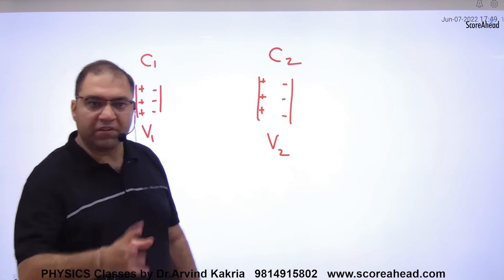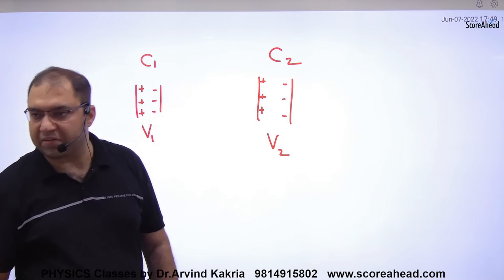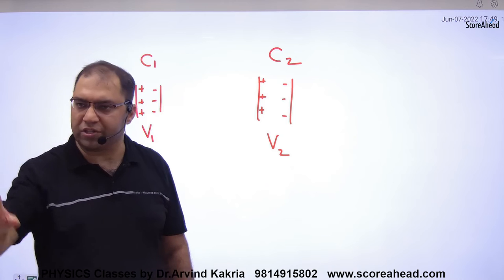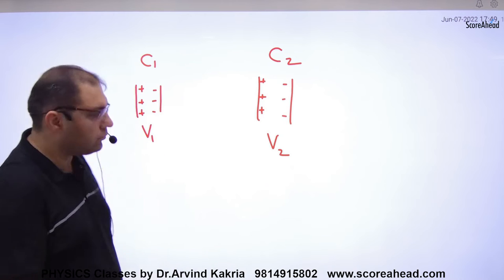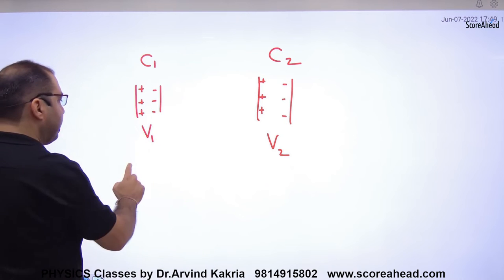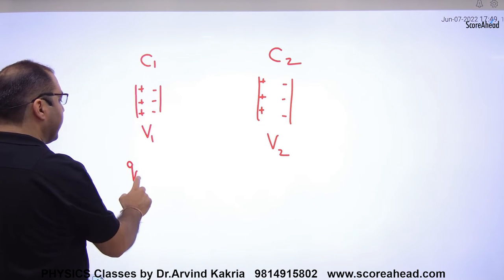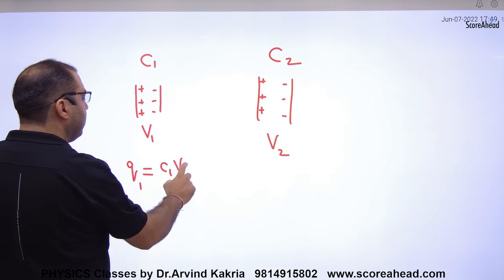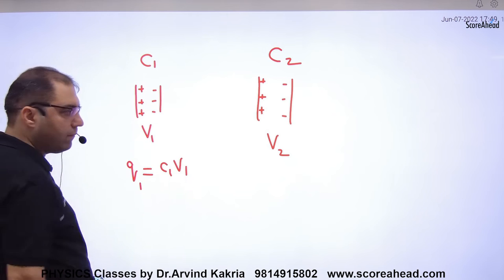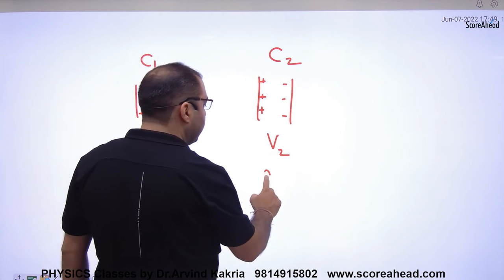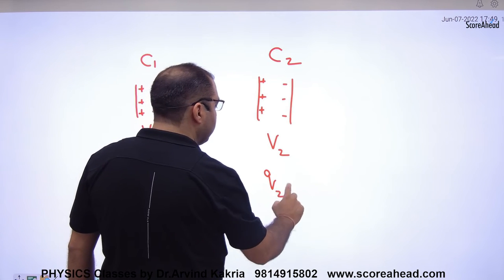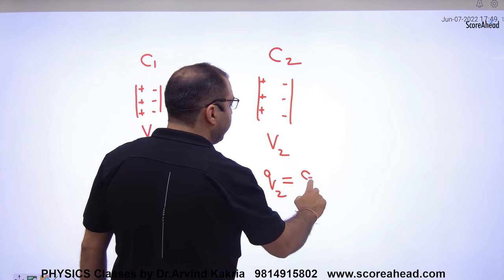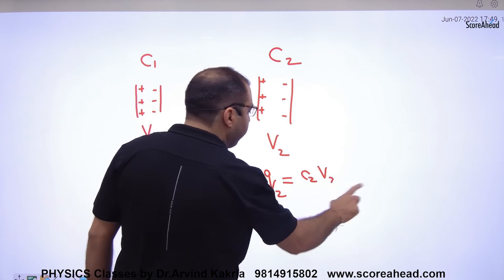The two capacitors have different charges. How much charge is on this capacitor? Q1 is equal to C1 into V1. How much charge is on the other? Q2 is equal to C2 into V2.